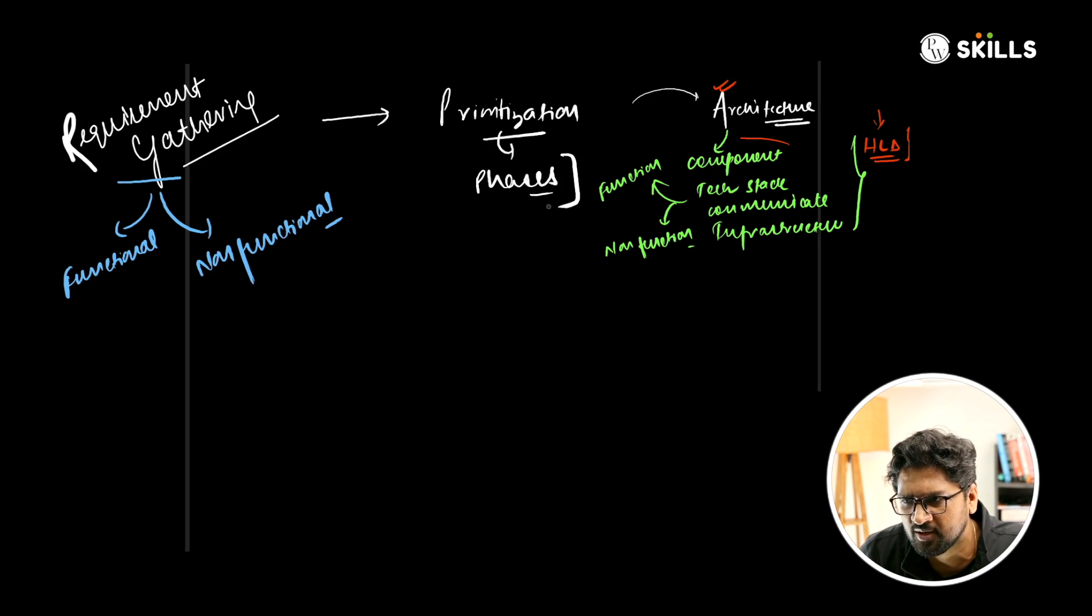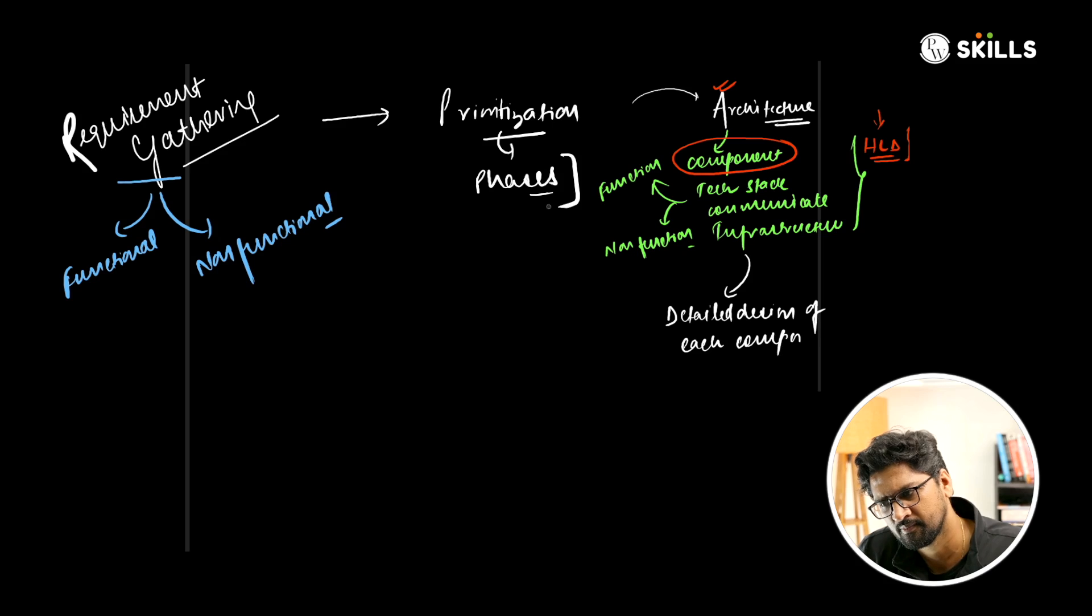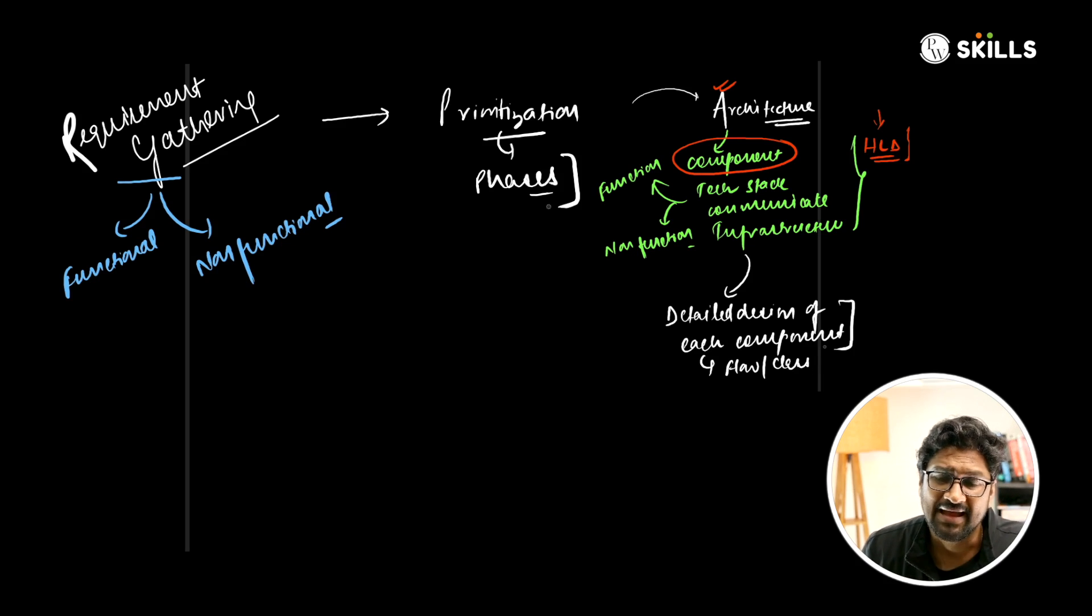High level design contains multiple components. What we do is take one component at a time and go into detailed design of each component - the flow, what will be the classes, and all these things. When you go a little lower and see which component is doing what, this is typically called the low level design or LLD.